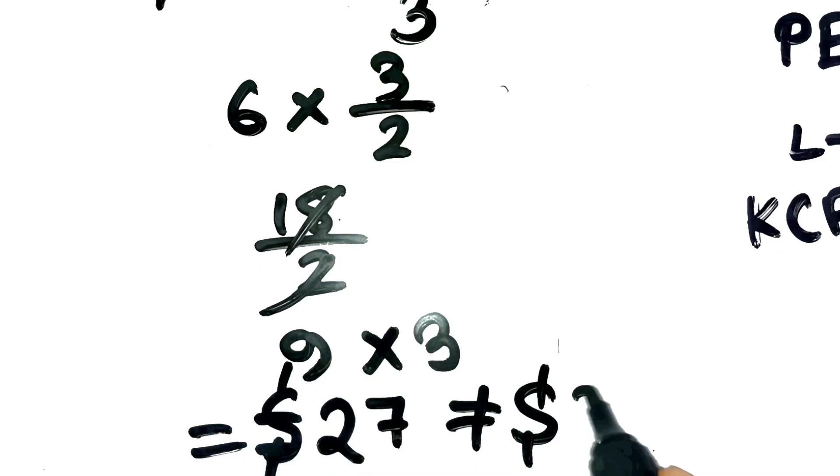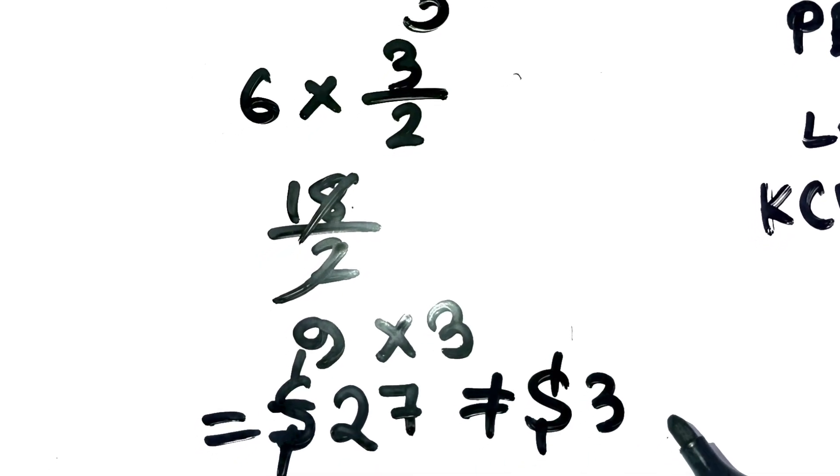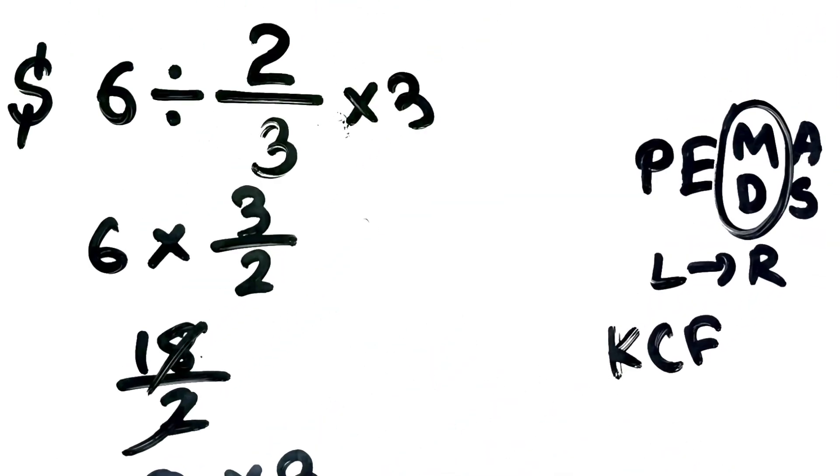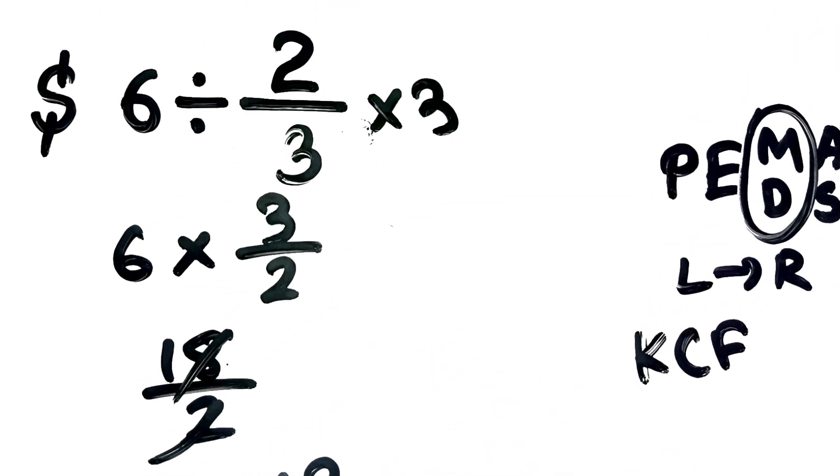Pretty wild, right? That tiny fraction flipped the whole thing upside down. It's not about canceling numbers. It's about following the order of operations correctly.